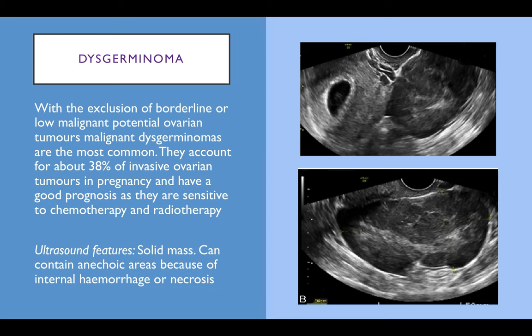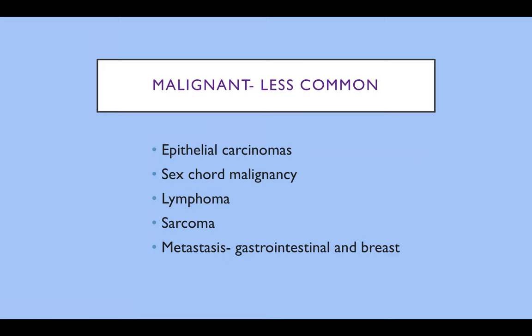Excluding borderline malignancies, dysgerminomas are the most common ovarian cancer in pregnancy, accounting for about 38% of invasive tumours. They have a good prognosis as they are very sensitive to chemotherapy and radiotherapy. The appearances are of a solid mass that can contain cystic areas due to internal haemorrhage and necrosis, and they are vascular. Other malignant masses include epithelial carcinomas, sex-cord malignancies, lymphomas and sarcomas, and metastases — usually bilateral solid masses, most commonly gastrointestinal such as Krukenberg tumours or breast metastases.